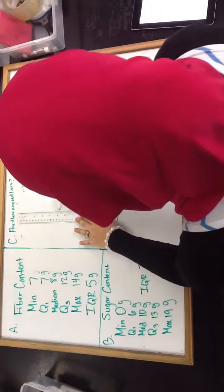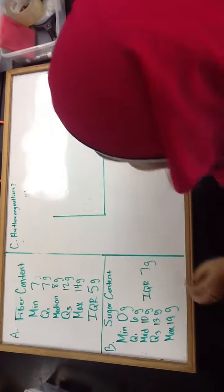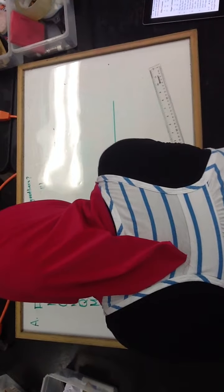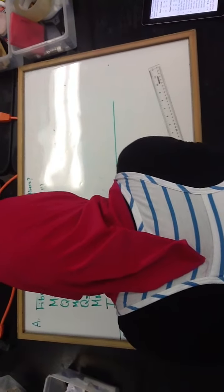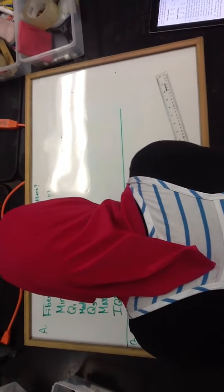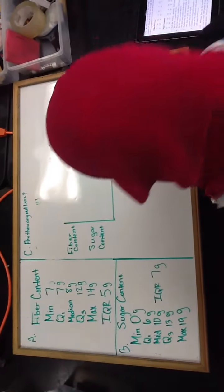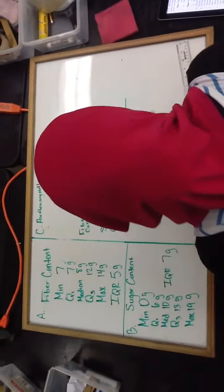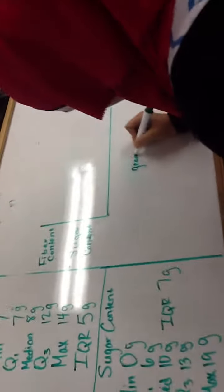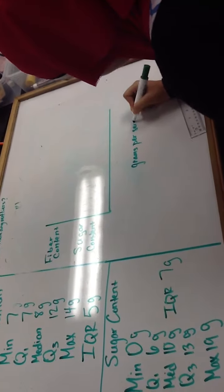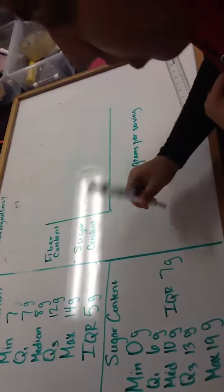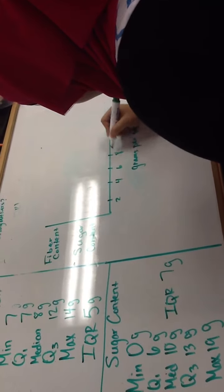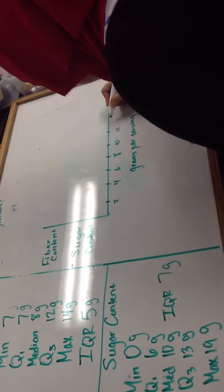Here you can have fiber content. Sugar content is on the top, and sugar content is the lower quartile. And then this is grams. Label the x-axis. X-axis is grams per serving. You could go by 2's: 2, 4, 6, 14.